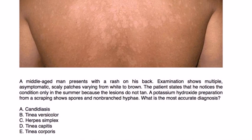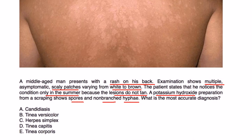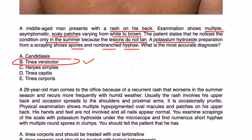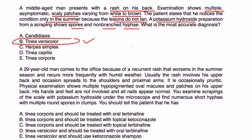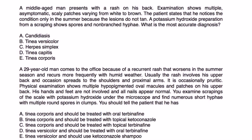Let's take a look at a couple of clinical vignettes. A middle-aged man presents with a rash on his back. Examination shows multiple asymptomatic scaly patches varying from white to brown. The patient states he notices the condition only in the summer because lesions do not tan. A potassium hydroxide preparation from the scraping shows spores and non-branched hyphae. The answer is tinea versicolor — you couldn't get a more classic clinical vignette. Also worth noting: tinea capitis involves the head, and tinea corporis is a fungal rash that appears as circles with an erythematous perimeter.